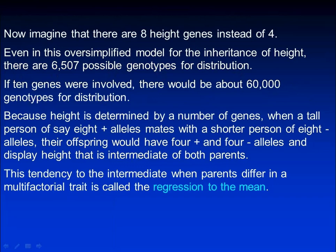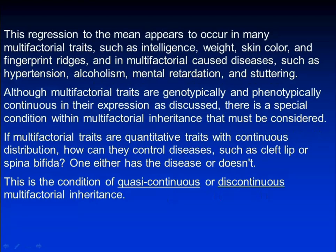Because height is determined by a number of genes, when a tall person with eight plus alleles mates with a shorter person with eight minus alleles, the offspring would have four plus and four minus alleles and display a height intermediate of both parents. This tendency toward the intermediate when parents differ in a multifactorial trait is called regression to the mean, and it appears to occur in many multifactorial traits.